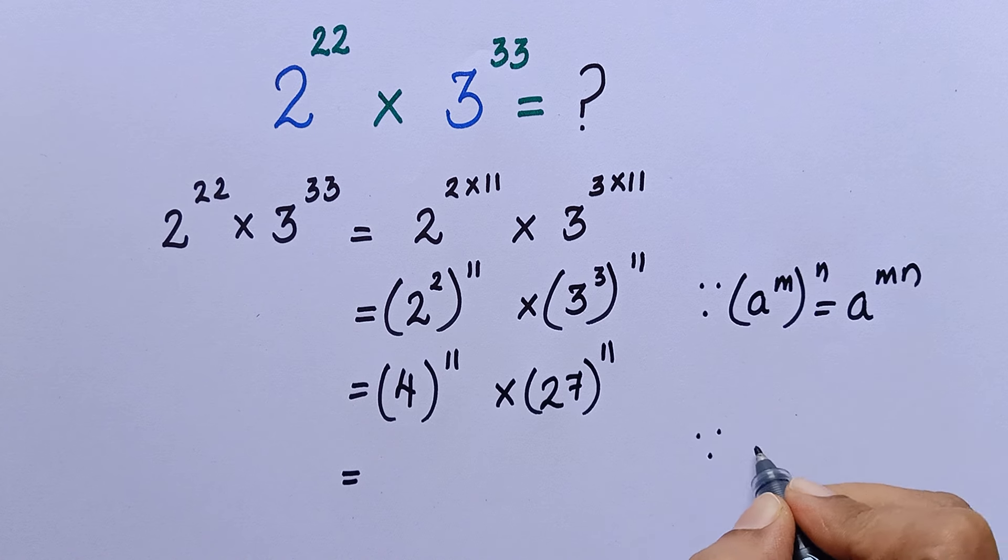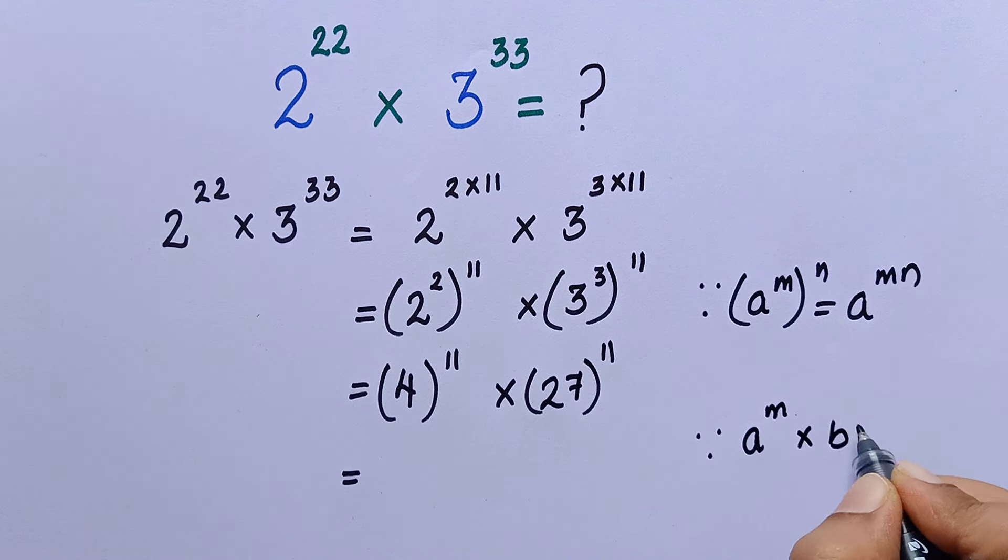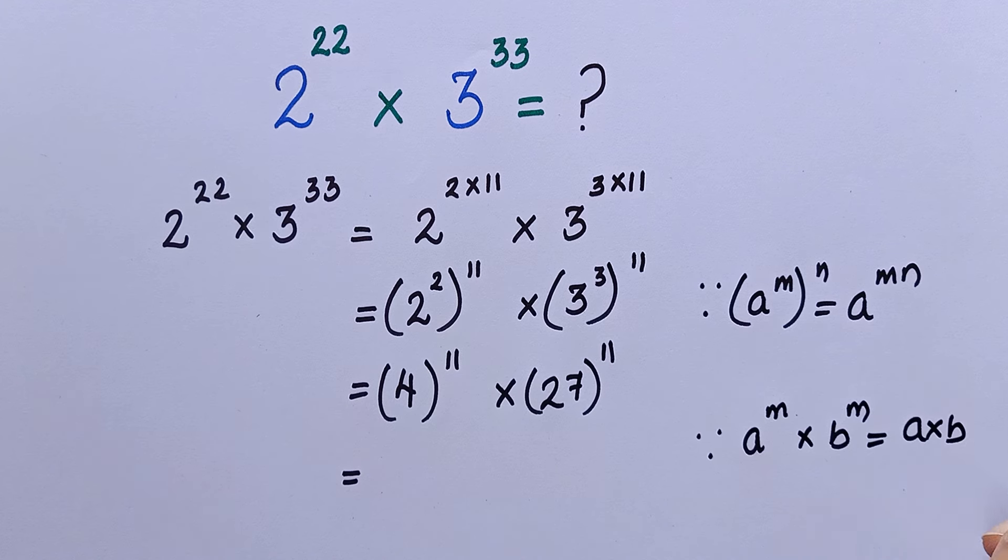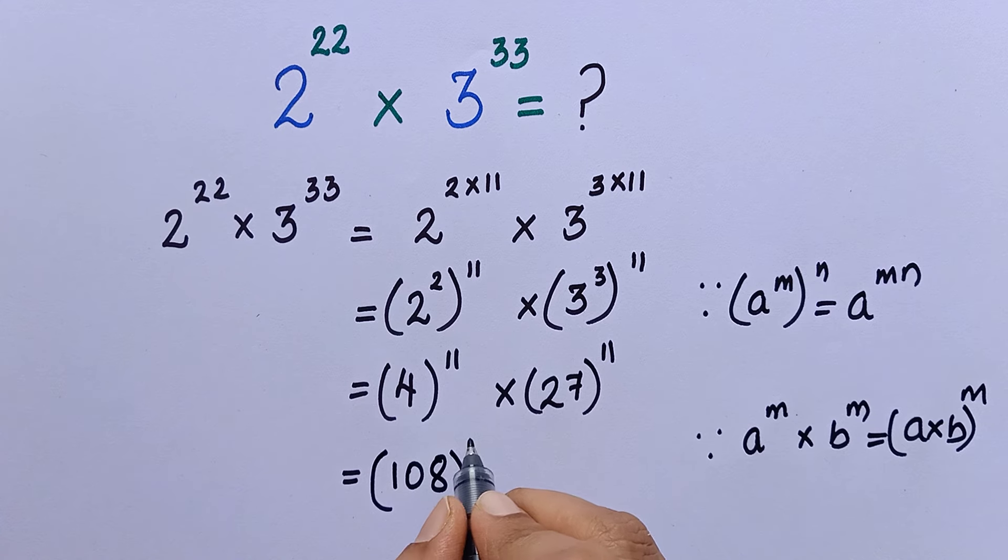That is a to the power of m into b to the power of m - see the bases are different and the powers are same - we can write this as (a into b) whole to the power of m. So what is 4 into 27 here? That is 108 whole to the power of 11. So this is the answer.